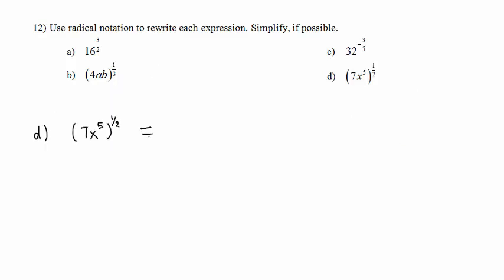In Part D, we have 7x to the fifth raised to the 1 half power. This is 7 to the 1 half power times x to the fifth to the 1 half power. 7 to the 1 half power means square root of 7. x to the fifth to the 1 half is carried out by multiplying these exponents.